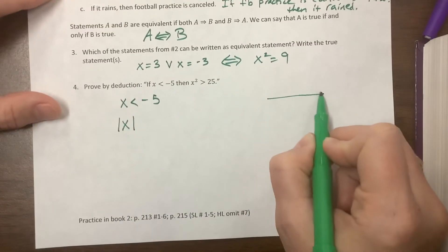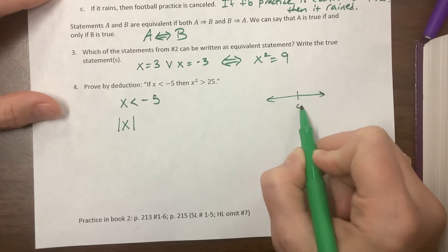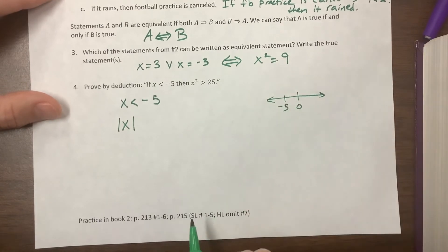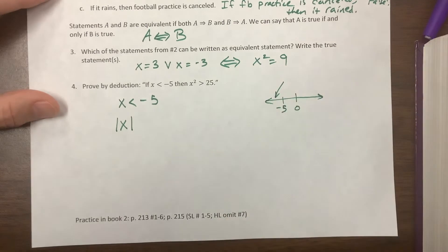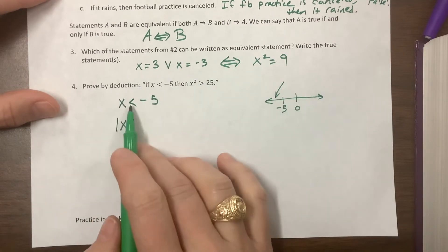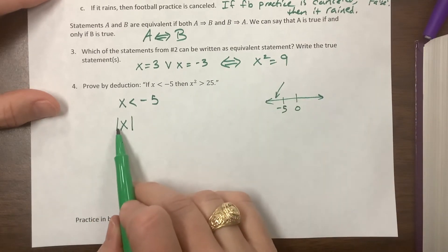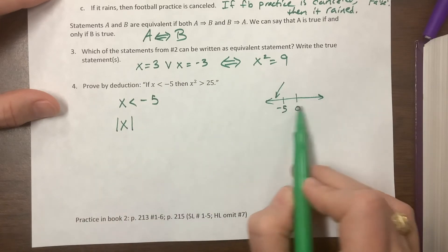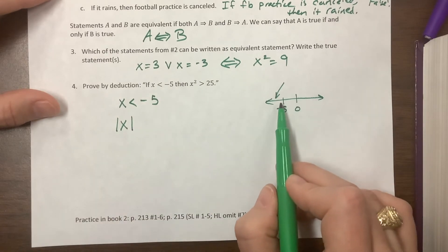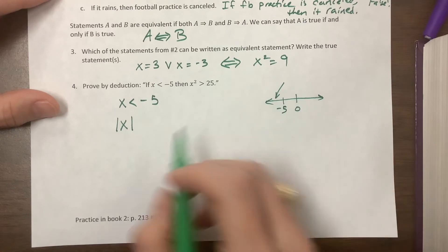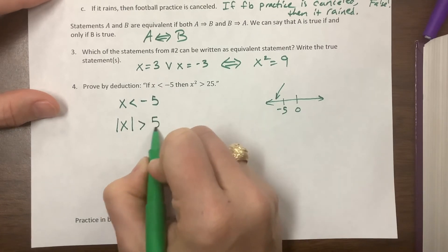If you think about this on the number line: here's 0, here's -5, and they're saying x < -5, so our value is somewhere over here. Then we know that |x|, the distance from 0, has to be more than 5 units. So |x| > 5.